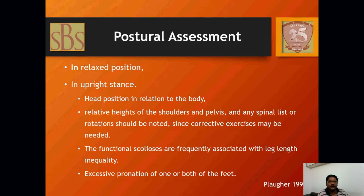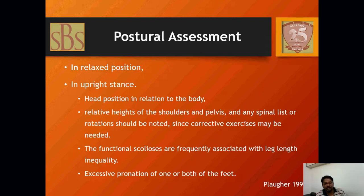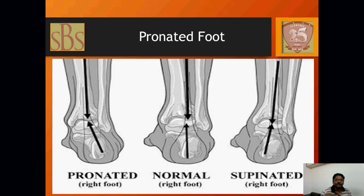Functional scoliosis is frequently associated with leg length inequality. Because of the listing, patients try to elevate the hip joint, resulting in pelvic unleveling. On the side of the listing, the patient shows an elevated pelvis — that side has shortness — and on the other side there is a drop of pelvis. On that side you see lengthening of the leg and excessive pronation of one or both feet. I've seen this pronation in my patient.